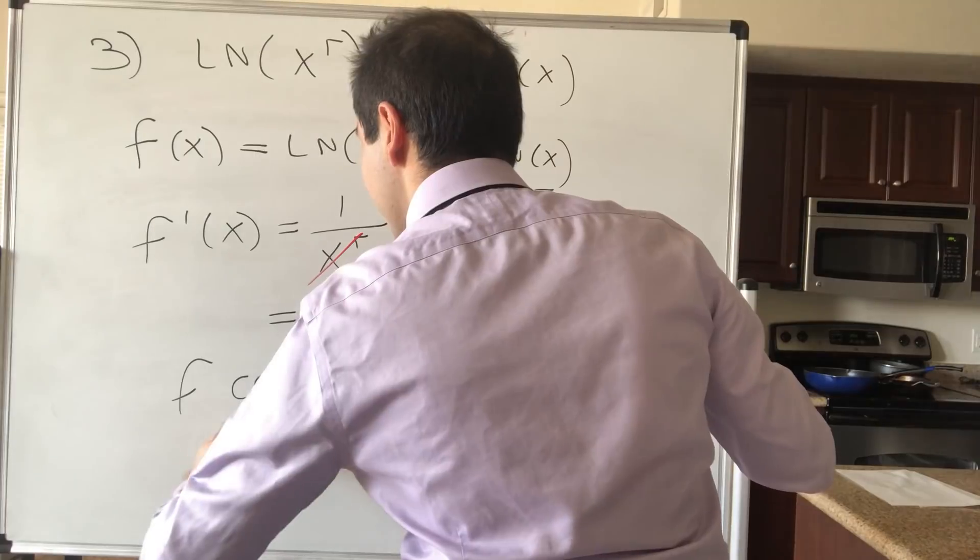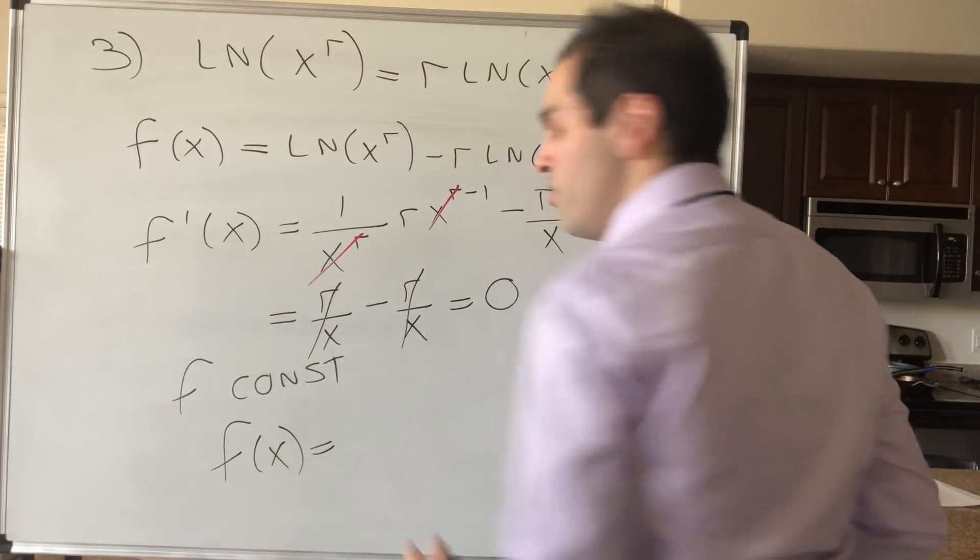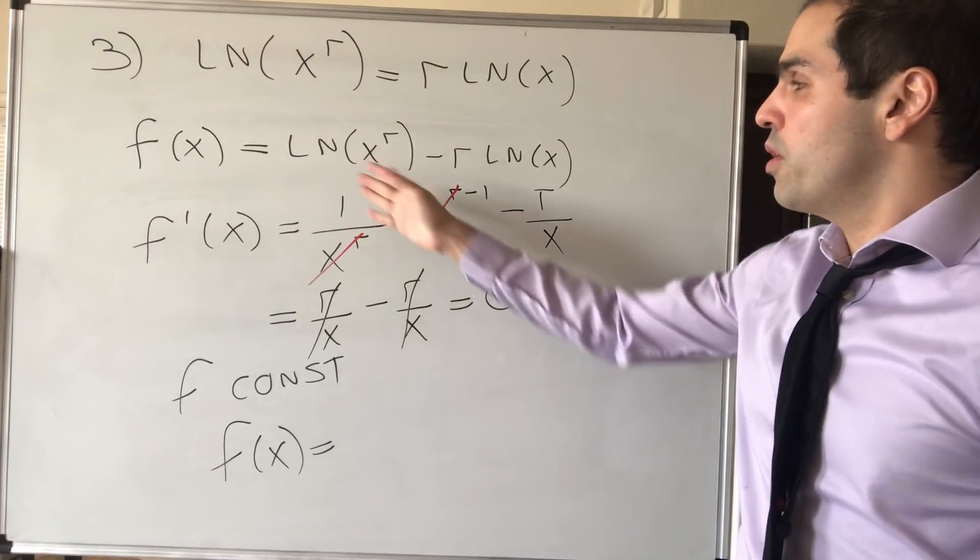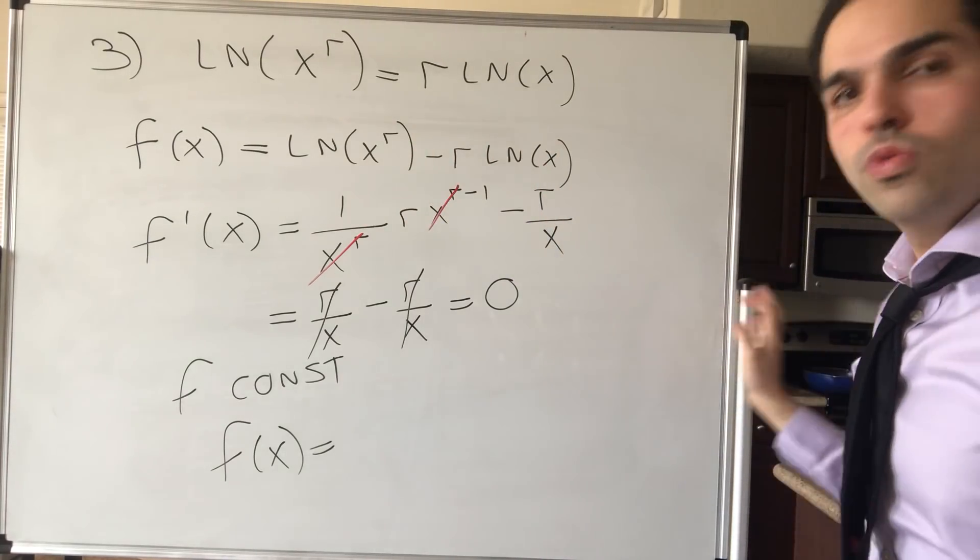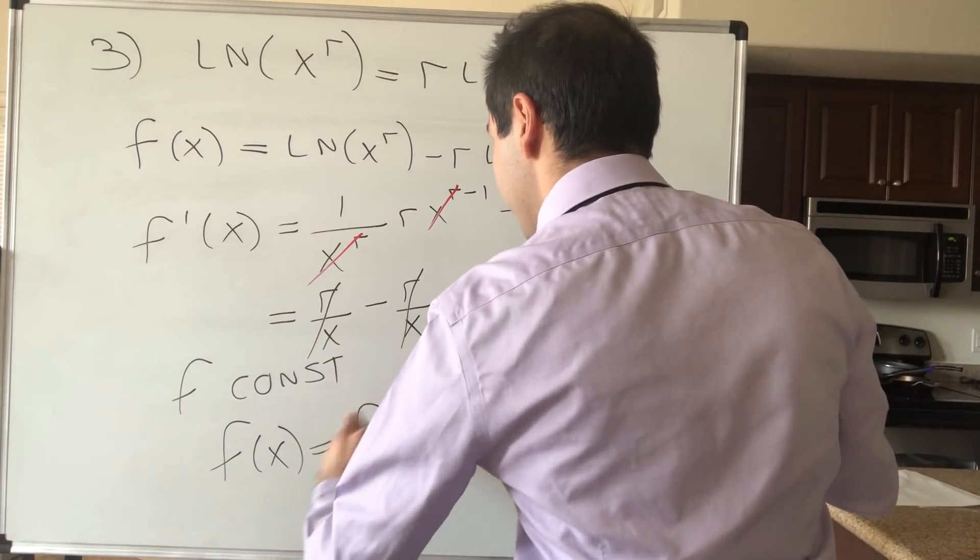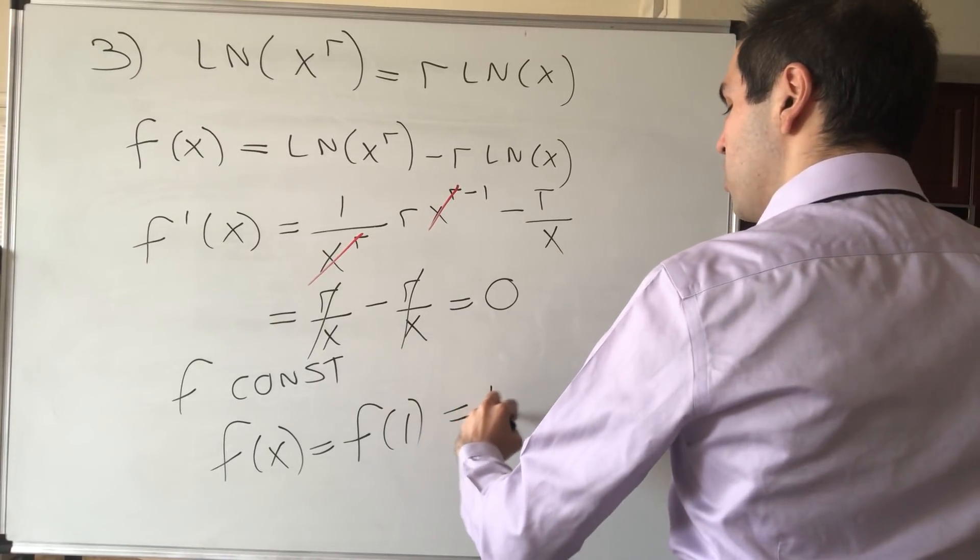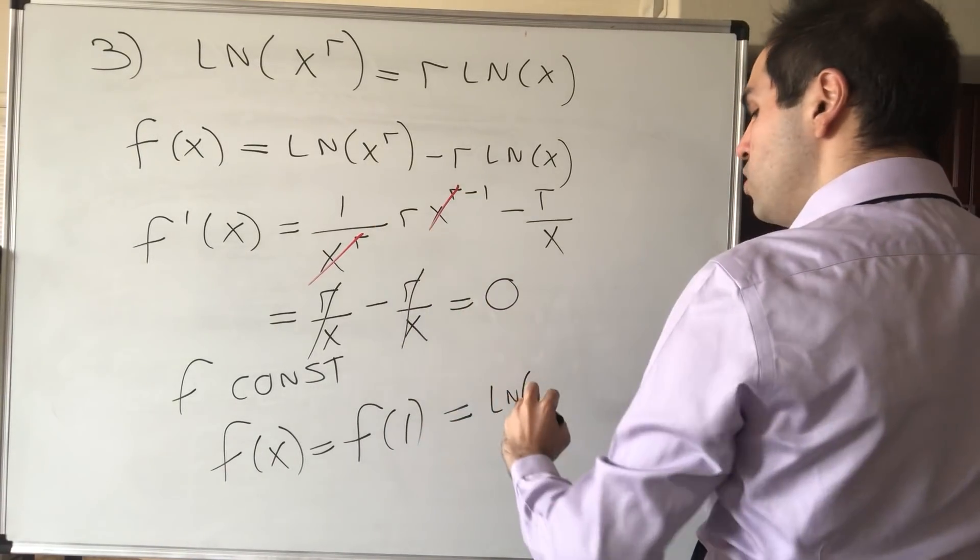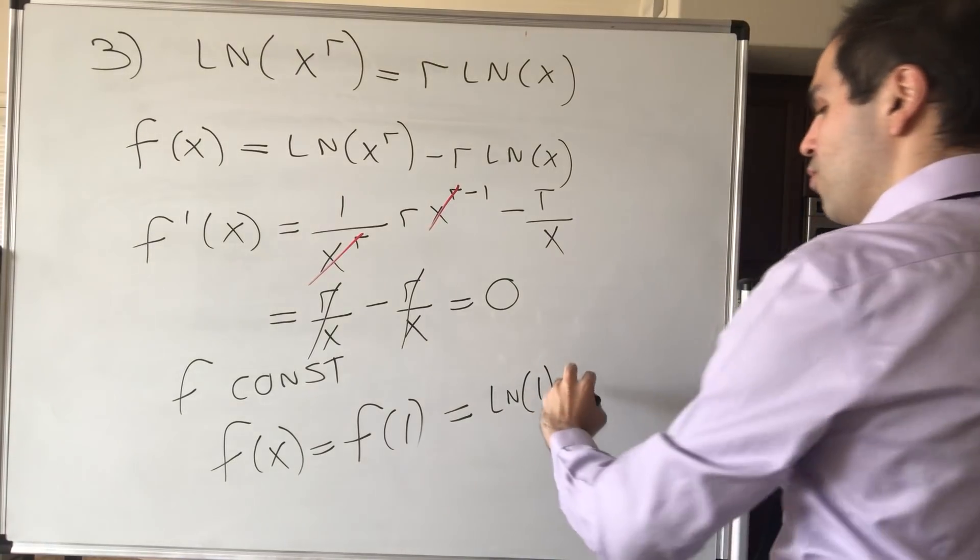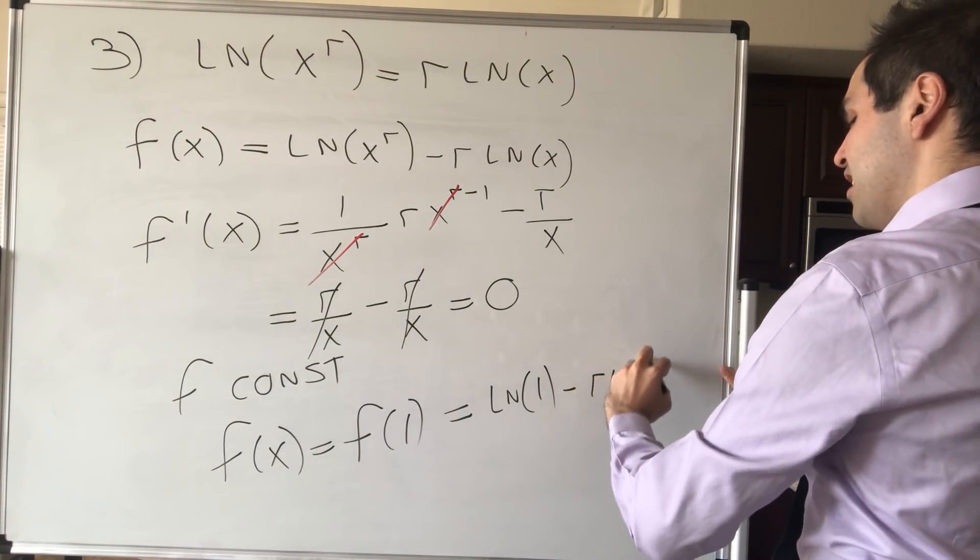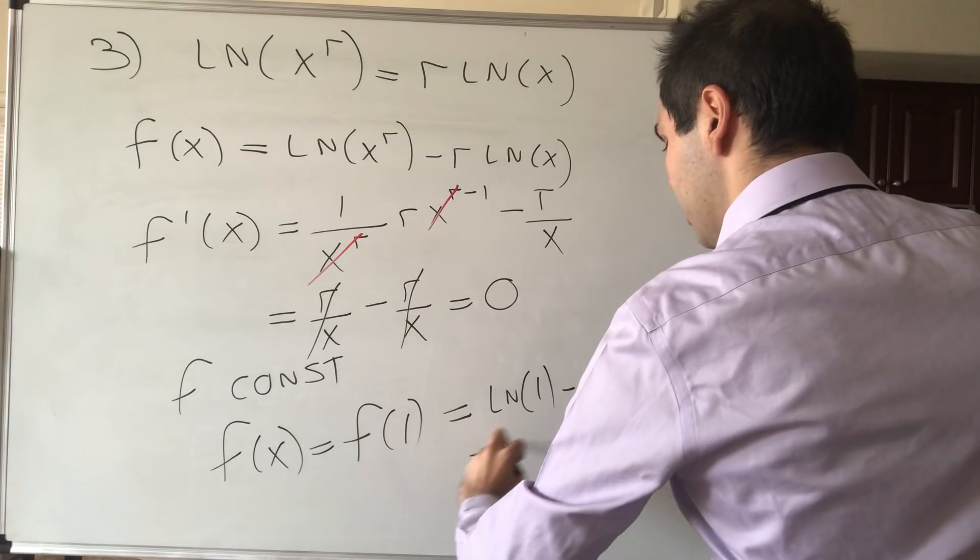And in particular, again, if a function is constant, it equals to whatever value you want, so in particular, just let x equals 1, and see what we get. So f of x equals f of 1, which becomes ln of 1 to the r, which is ln of 1, minus r ln of 1, and that's 0.